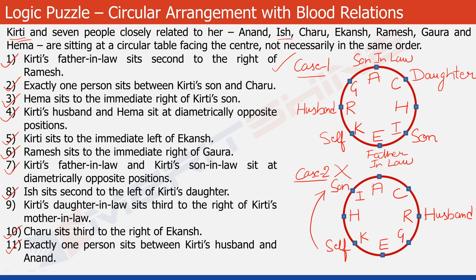Now let's look at the last step of solving this problem. Statement 9 says Kirti's daughter-in-law sits third to the right of Kirti's mother-in-law. The two vacant positions are H and G. If Kirti's daughter-in-law sits third to the right of Kirti's mother-in-law, H should be the mother-in-law — and the third position to the right of H would be G, who becomes the daughter-in-law. With this we have completed the structure. That's our final answer.